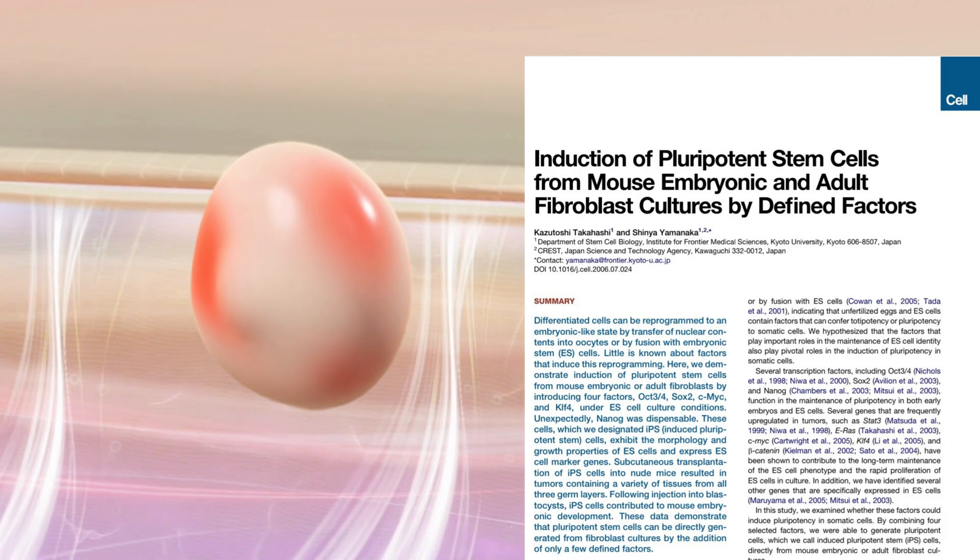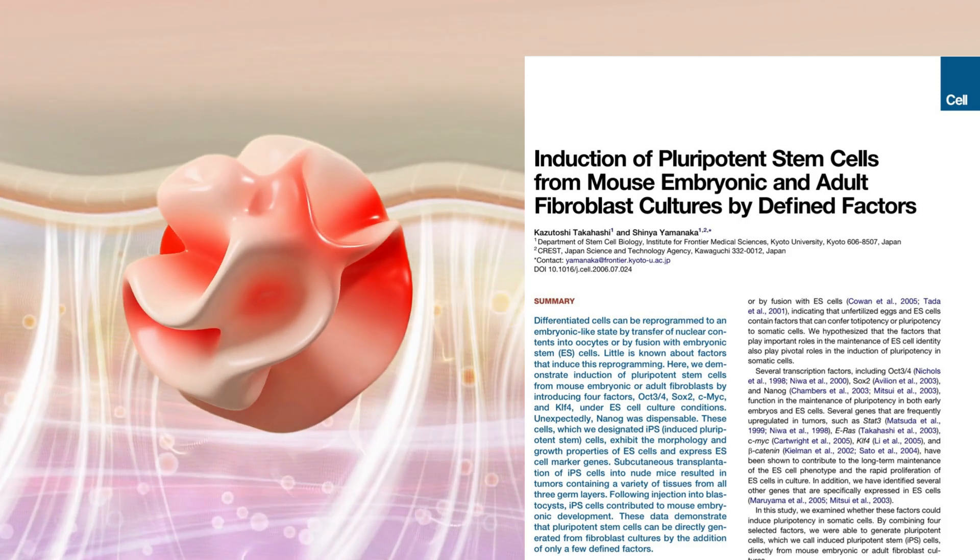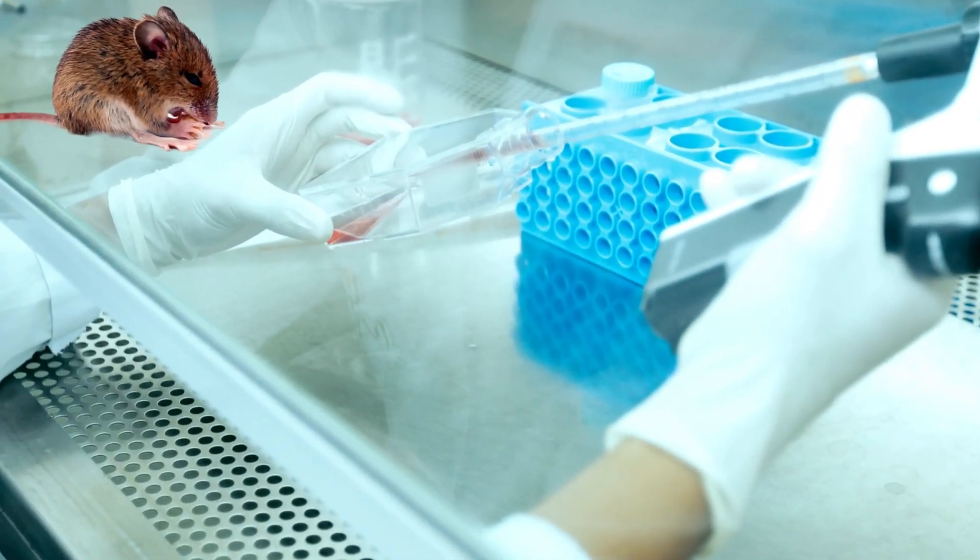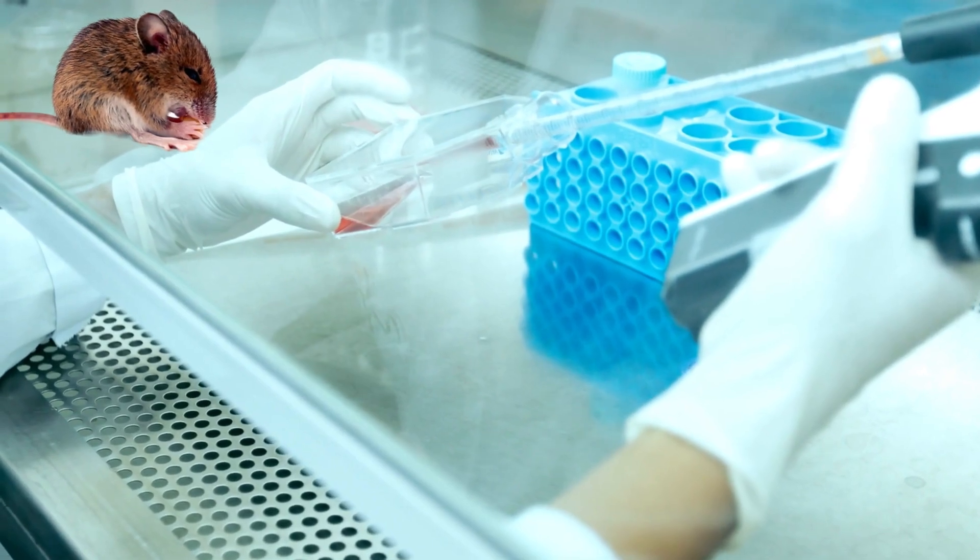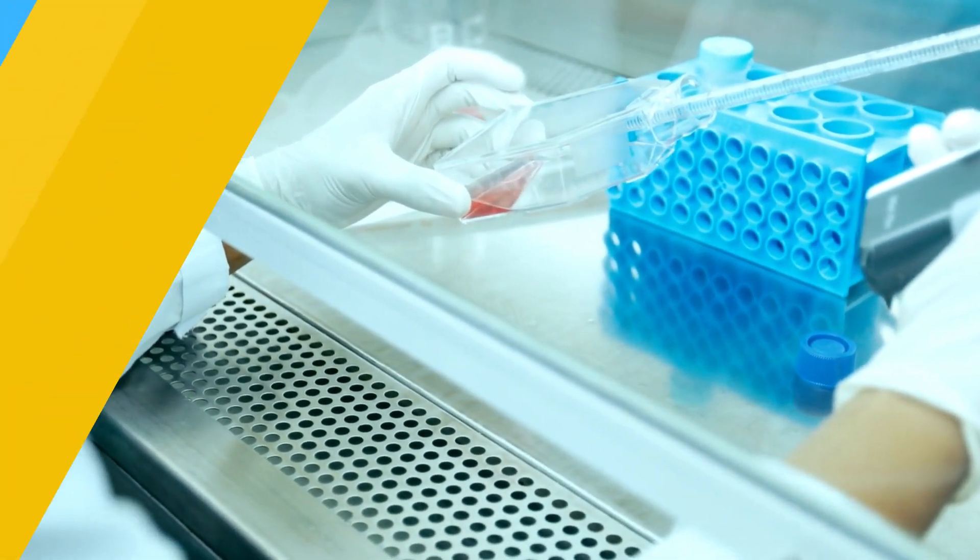This groundbreaking study discovered the science needed to make pluripotent stem cells from a type of cell found in adult skin, fibroblasts. In these experiments, they took cells from mice and manipulated them genetically. To understand what genetic changes they made, we have to look at how the cell works at a molecular level.